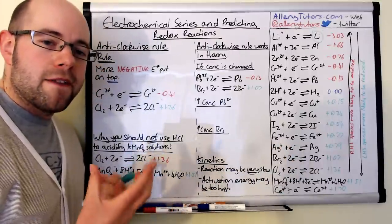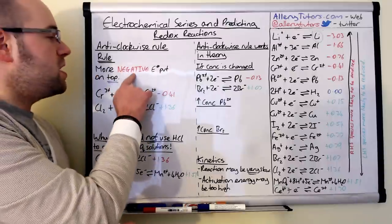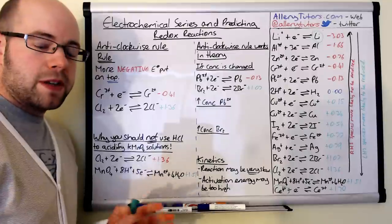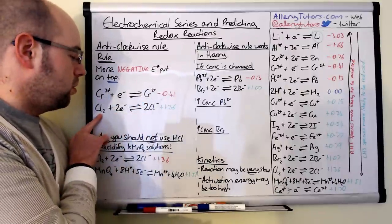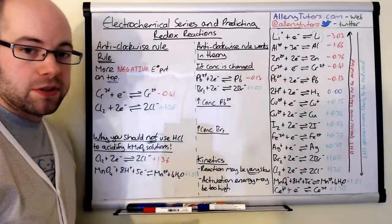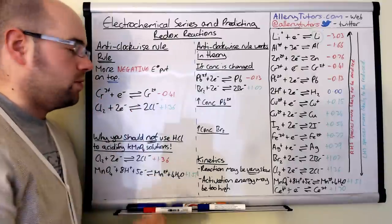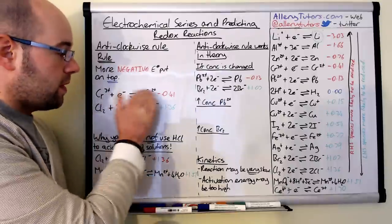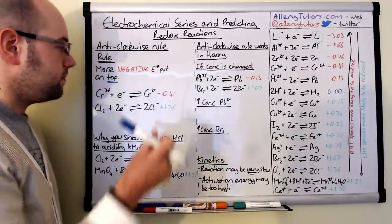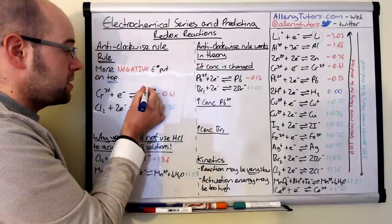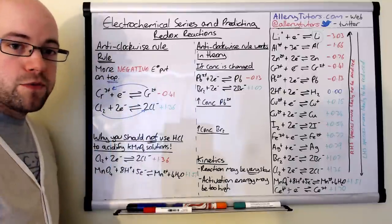Now we're going to predict a feasible redox reaction using the anti-clockwise rule. The basic rule is: put the most negative E0 on the top of the equation. I've picked two half equations from the electrochemical series — chromium 3+ to chromium 2+, and chlorine to Cl− ions — with their E0 values written next to them. The most negative E0 is chromium 3+/chromium 2+, so that goes on top. We then draw anti-clockwise arrows: starting from the right hand side, an arrow going one way and an arrow going the other, showing an anti-clockwise movement around our two equations.